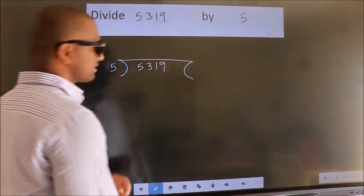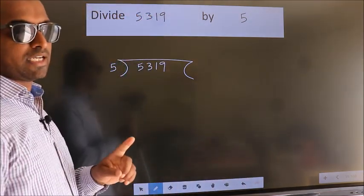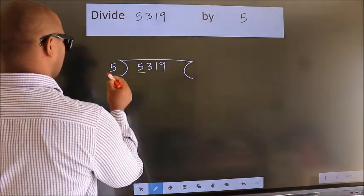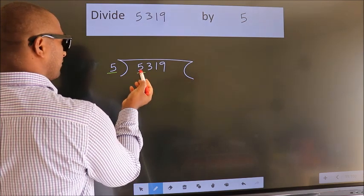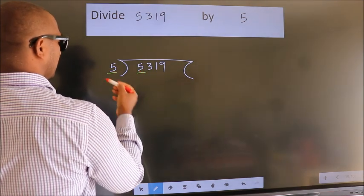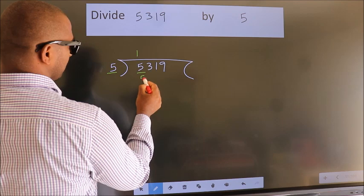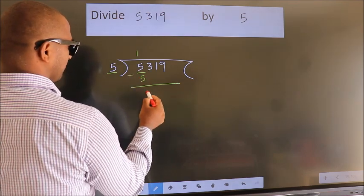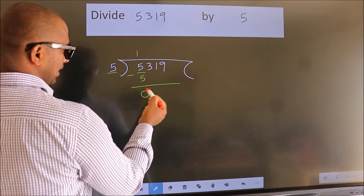This is your step 1. Next, here we have 5. Here 5. When do we get 5? In 5 table. 5 once, 5. Now, we should subtract. We get 0.